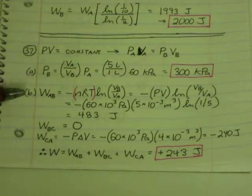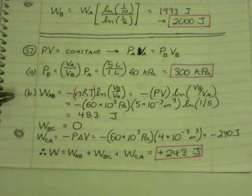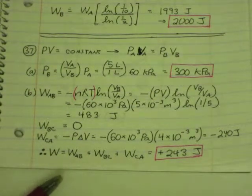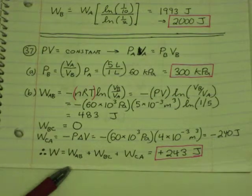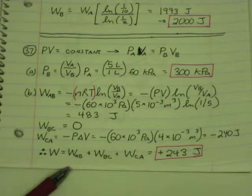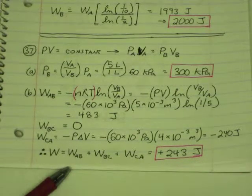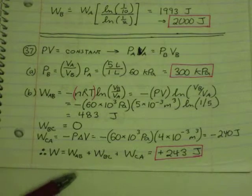Now, for part B, you go down to the bottom of the screen. The total work, that's what it's asking for, that's going to be the work for each path. So it's going to be the work from A to B, plus the work from B to C, plus the work from C to A. So let's solve for each of those individually.